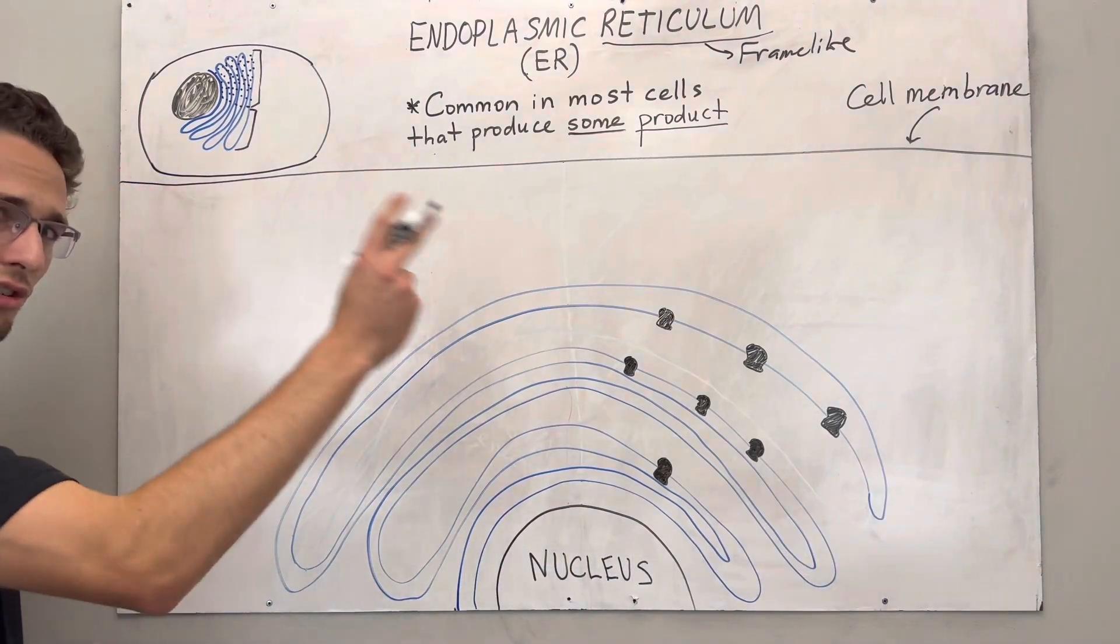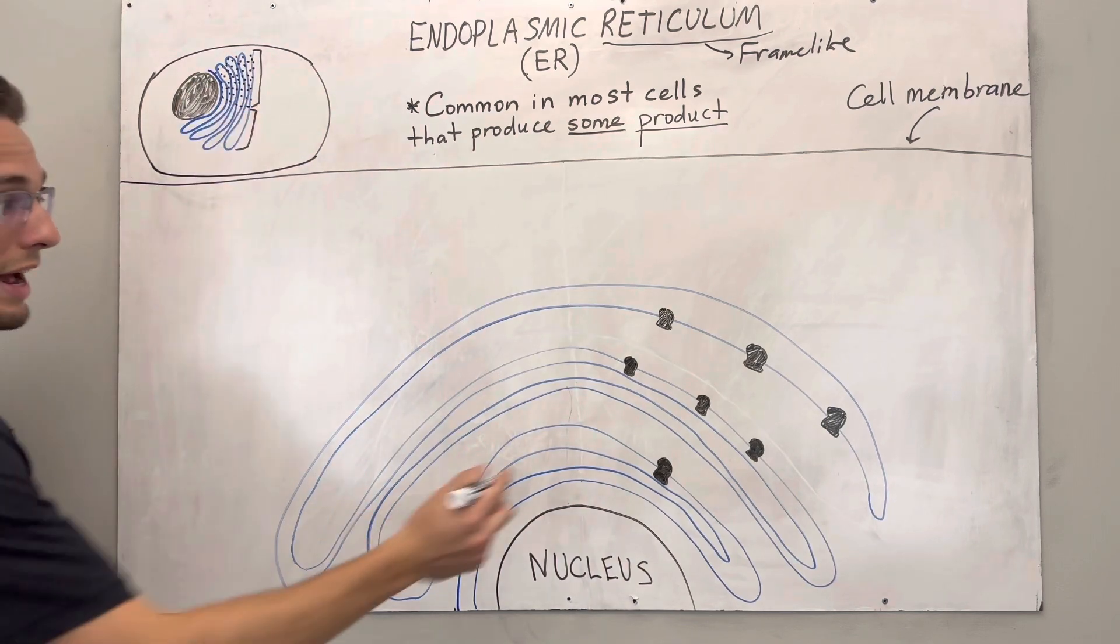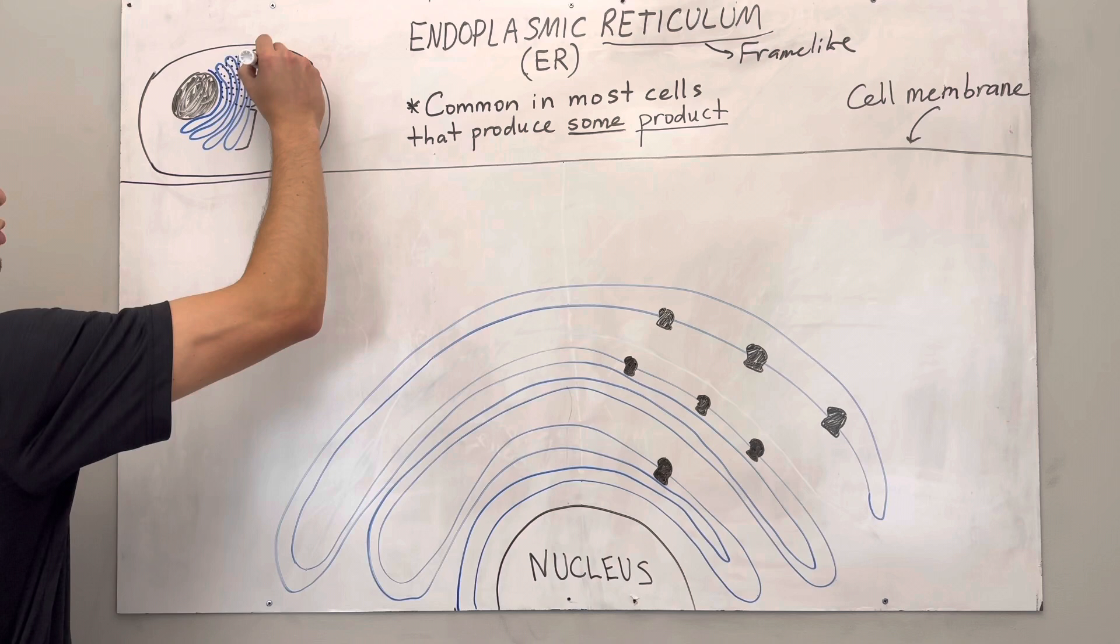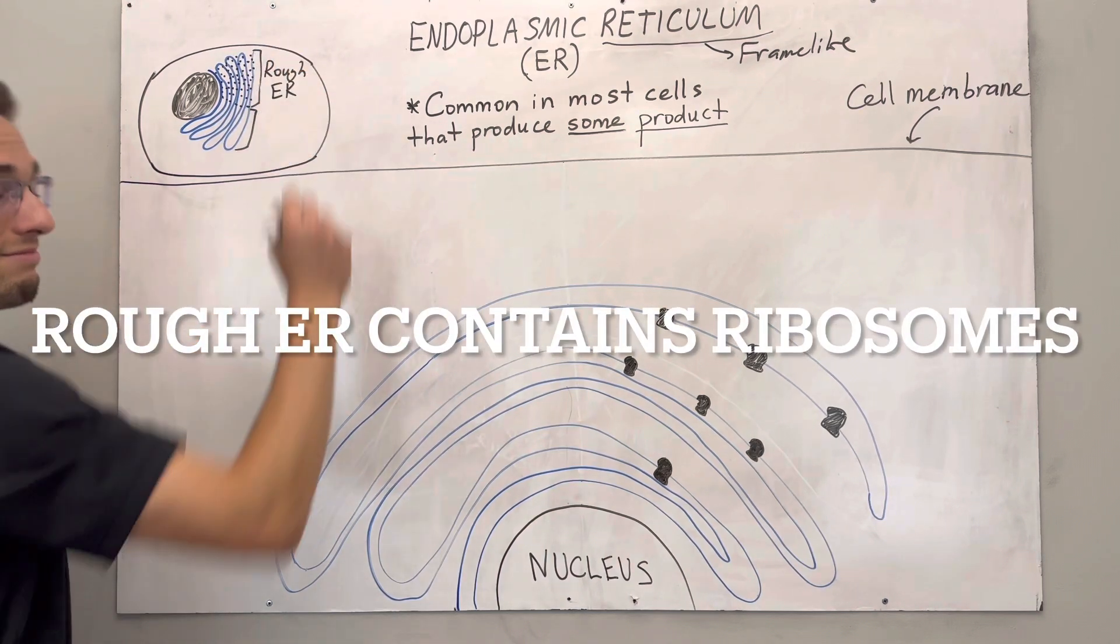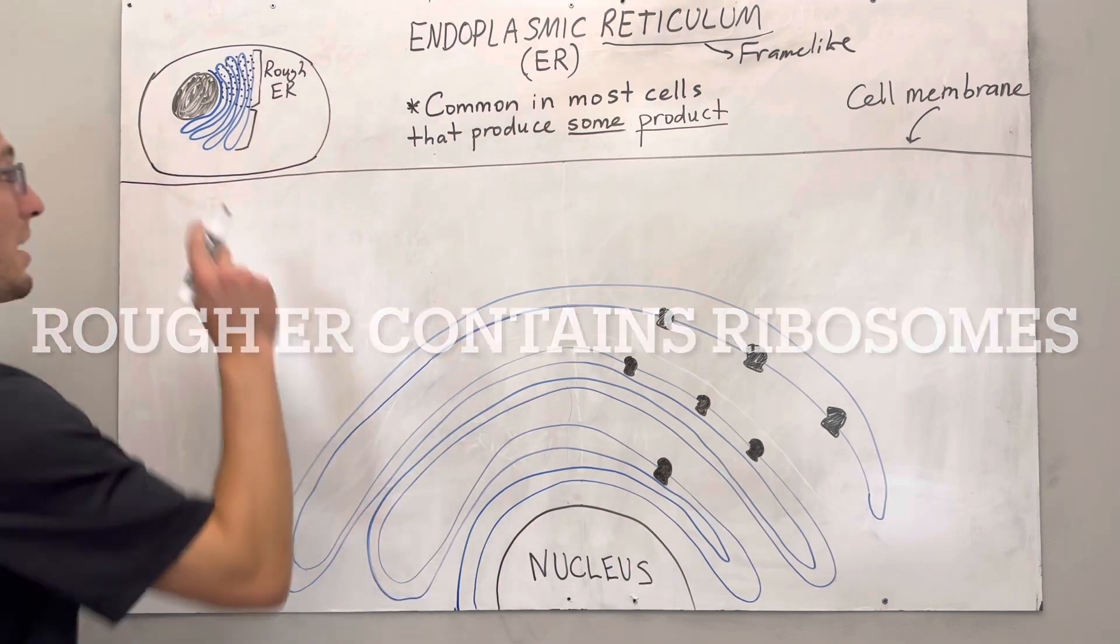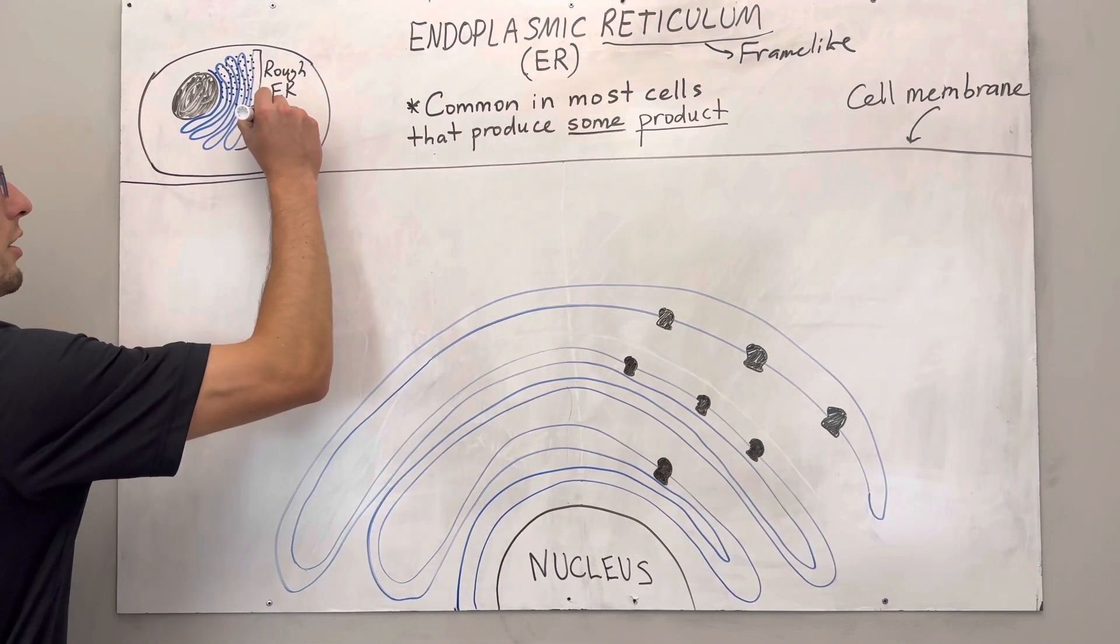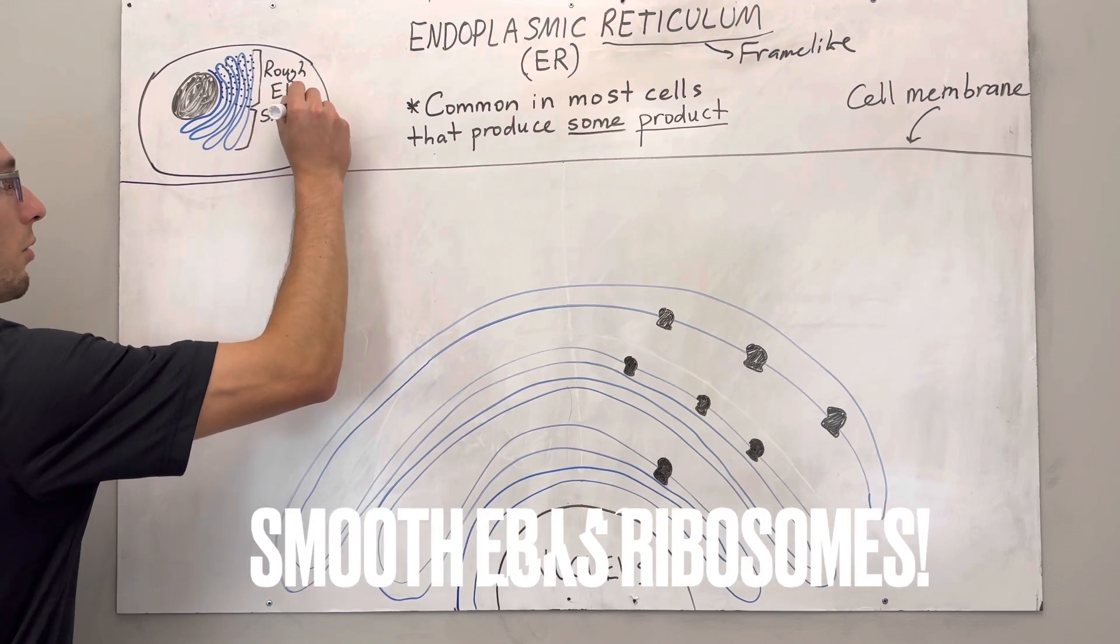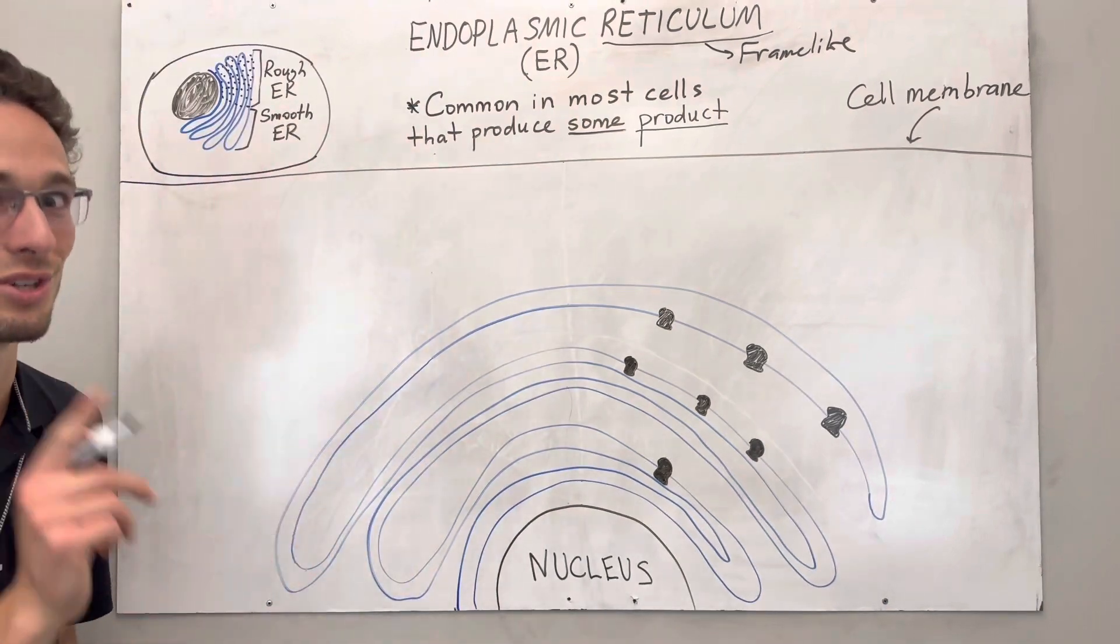Now, I want to remind you there's two parts to the ER. There's one that has a lot of dots, ribosomes, which we'll talk about later. That is called the rough ER. Why? Because it looks pretty rough, right? Makes sense. The other one doesn't have those ribosomes and it's going to be called the smooth ER. Why? It looks smooth. Biology's easy, y'all. It's in the names usually.